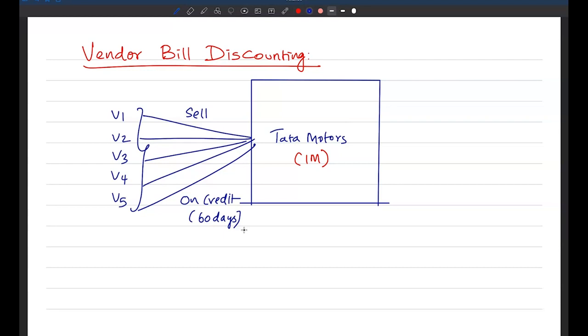But in order to ensure continuous flow of activity, in order to ensure continuous availability of supply from these vendors, what this industry major Tata Motors will do? It will enter into an arrangement with a financial institution, let's say ABC Bank. It enters into an arrangement with ABC Bank and the arrangement is to finance these vendors by discounting their invoice whenever they supply to Tata Motors.